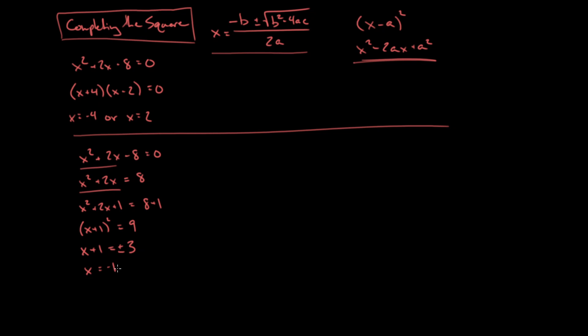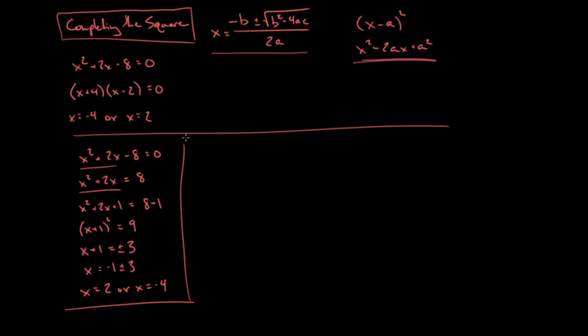That means x equals negative 1 plus or minus 3, so x is either negative 1 plus 3, which is 2, or negative 1 minus 3, which is negative 4. So this is just another process we can go through to solve a quadratic.